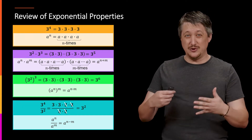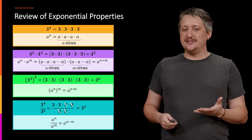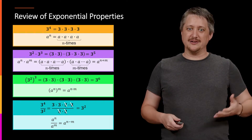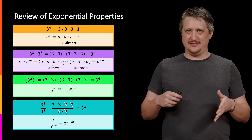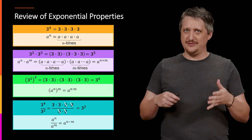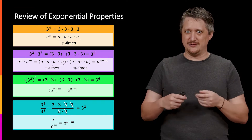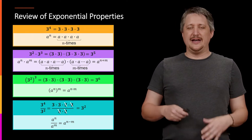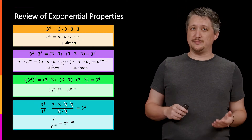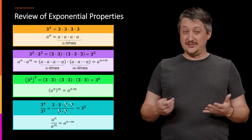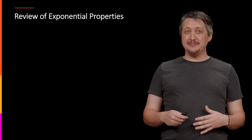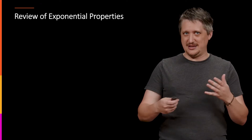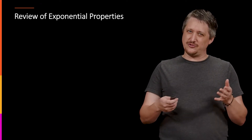Now as a note, it's easy to see that you get n minus m when n is bigger, but it turns out this works no matter what. If n is bigger, smaller, or they're the same size, it all works out. This is because of how we define negative exponents, which might seem mysterious, but I'm going to try to make the argument that it's actually completely natural and obvious if you kind of tilt your head and squint a little.